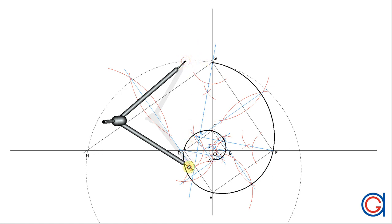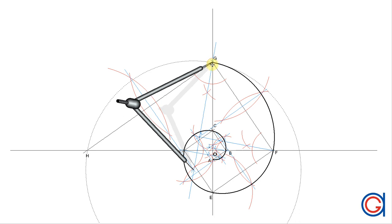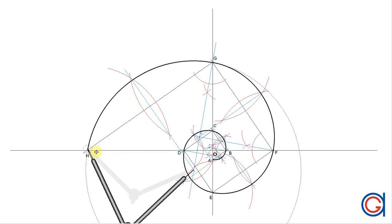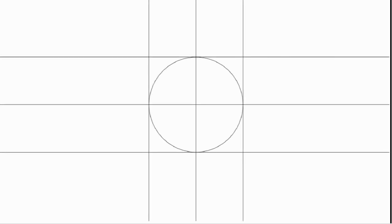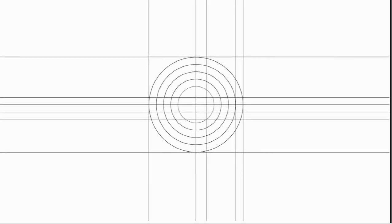And if we have been working with precision and accuracy, it should cut exactly at point H, as can be seen here. So here we have our logarithmic spiral. I hope you enjoyed the video — please like or subscribe to our YouTube channel. Thank you very much, see you next time.